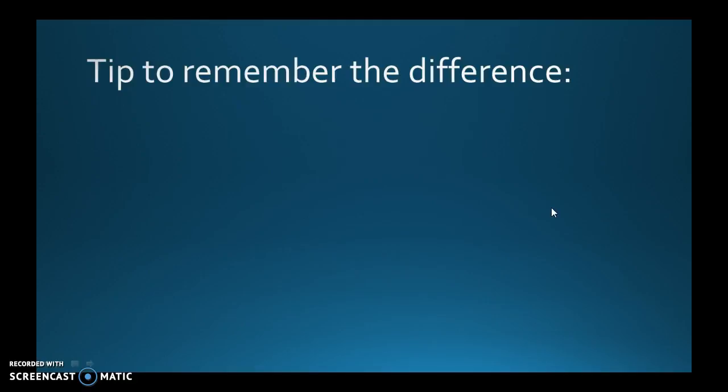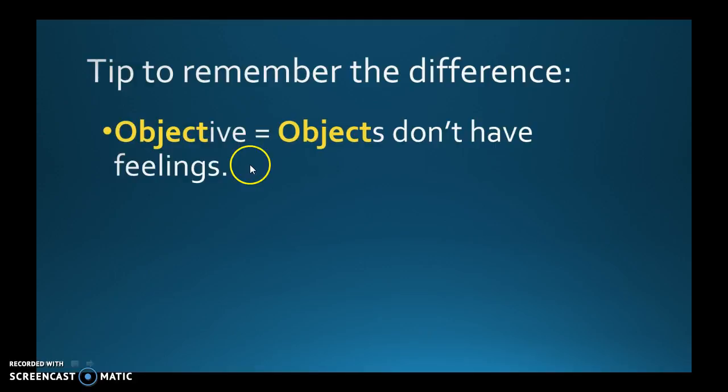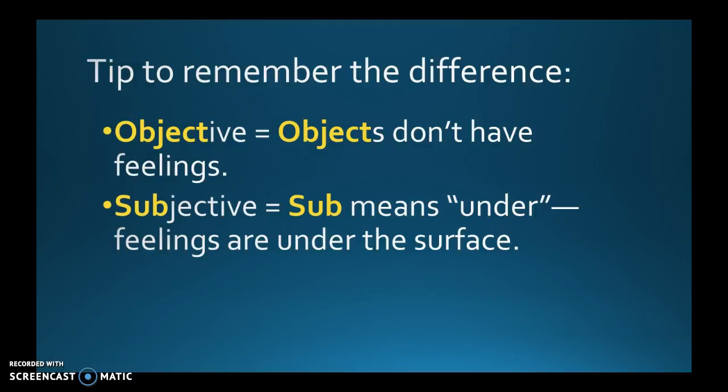Here are tips to remember the difference. For objective: think of 'object.' Objects don't have feelings — your computer mouse, keyboard, desk, chair. They're objects; they don't feel anything, so they're described objectively. For subjective: 'sub' means under, like submarine or subway. Your feelings are under the surface — that's how you feel. That's one way to remember the difference.